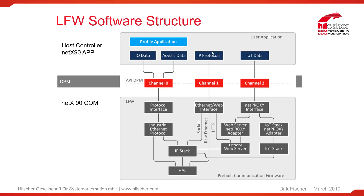So whenever an external client like a web browser asks for a resource — an HTML page, a picture, or whatever — the web server can forward this request to your application and you can provide the data. Beside this, the extended web server is also able to provide data directly from the flash memory. So if you use an external flash memory, you can create a file system there. You can store a lot of web content: PDF documents, JPEG, JavaScript, whatever you want. The web server will provide this data to an external client, and only dynamic data might be requested from your application.